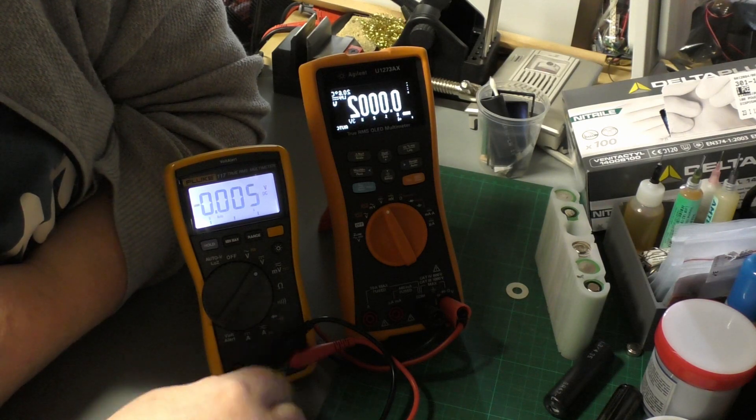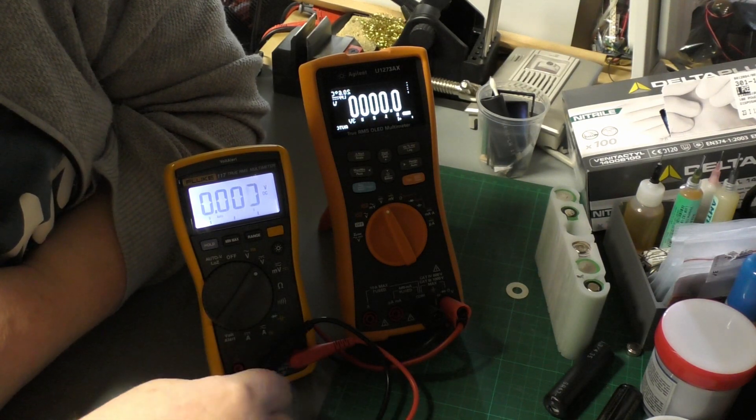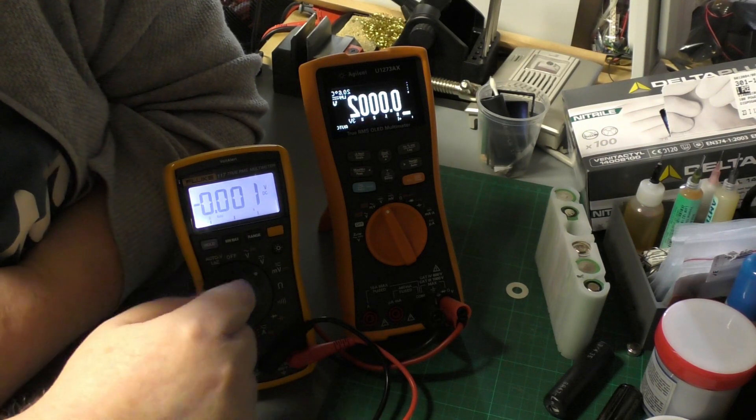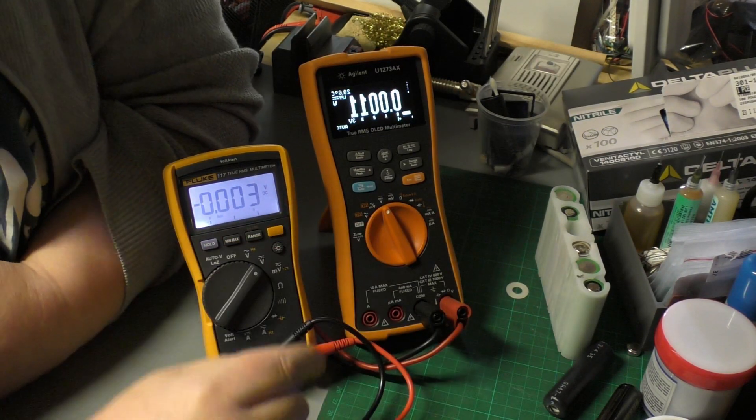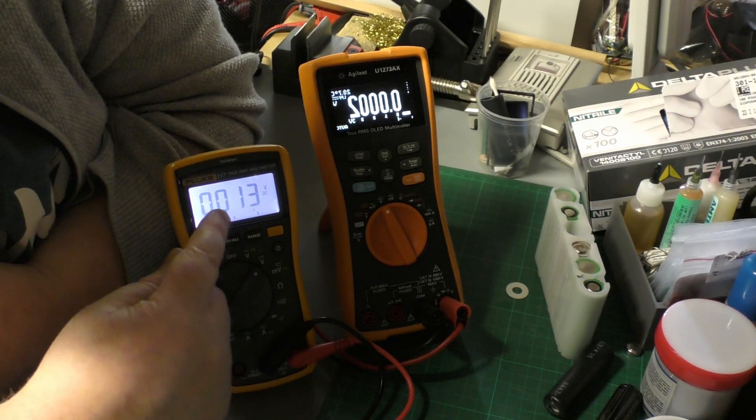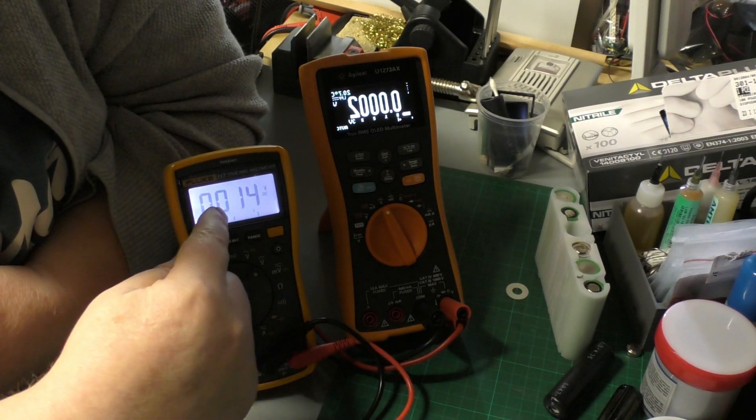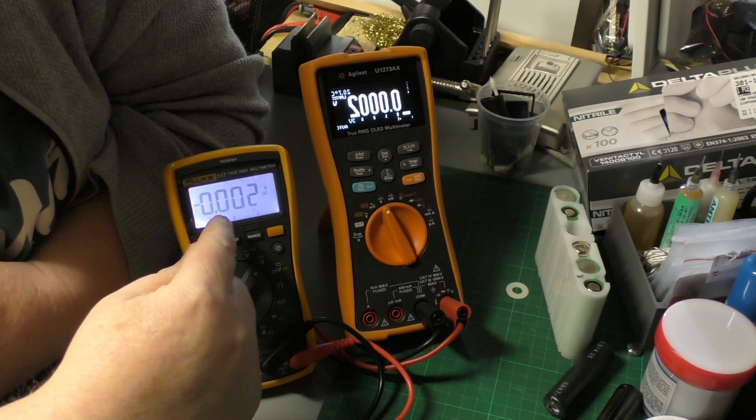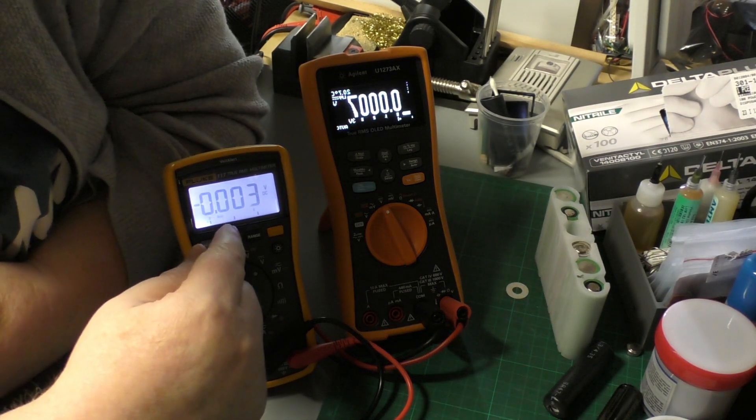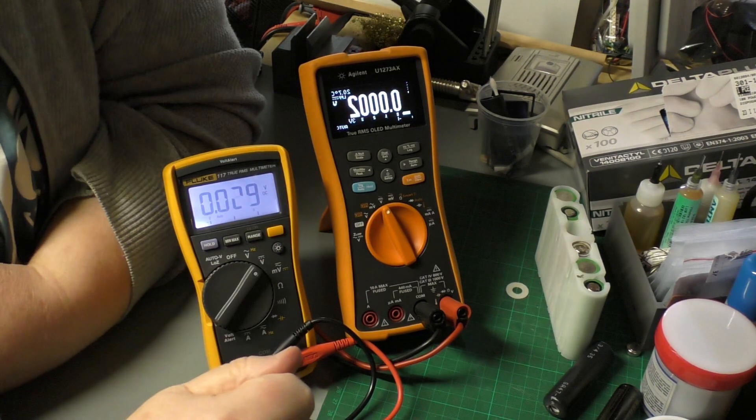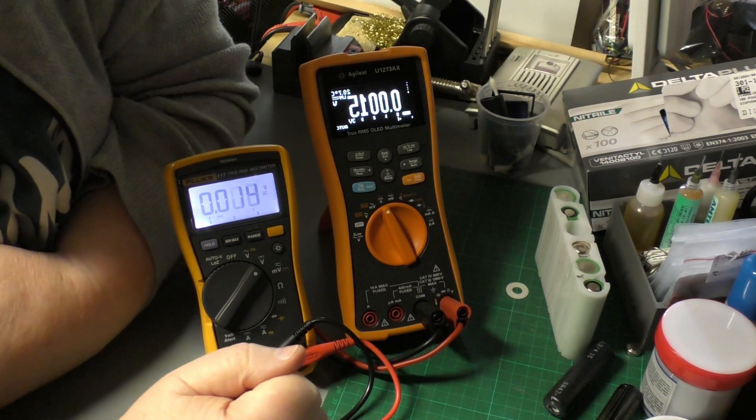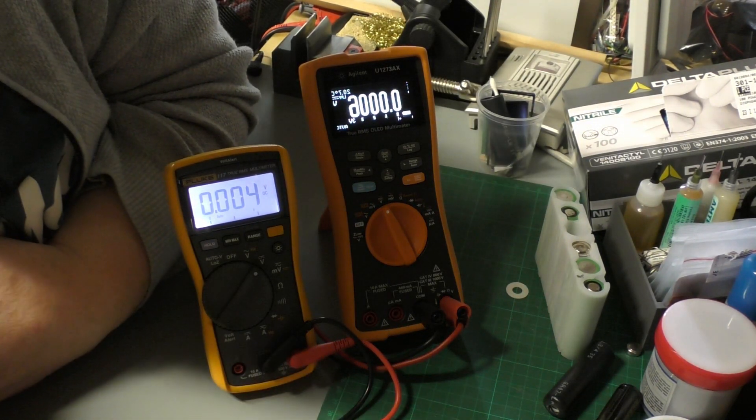because if you put them pointing downwards, this thing tips over. This guy is way lighter than this guy. The other thing I notice is this guy reads the measurement way quicker than this guy, so the response time of this is pretty much instant from what I can see so far, whereas this guy takes a little while to get to the final reading.